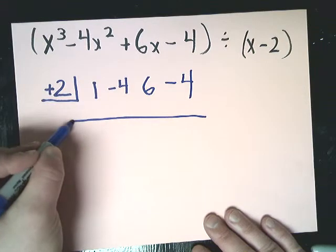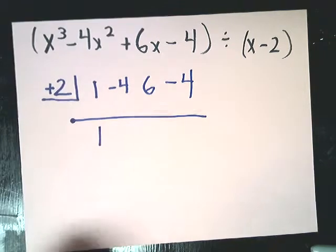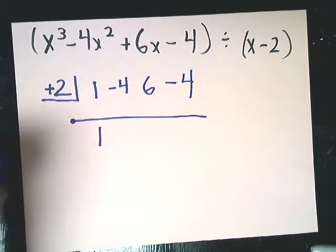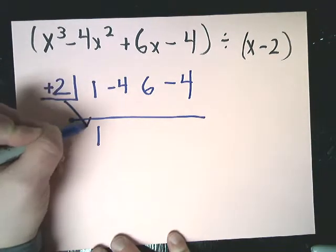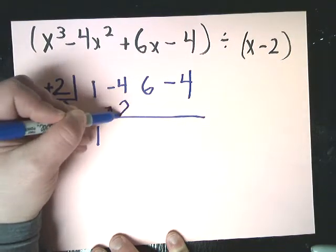From here, there are a couple steps. The first step is to bring down the initial coefficient, so bring down the 1. From there, I want to do the positive 2 times 1. So that comes up here, and it gives me 2.